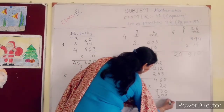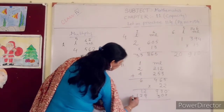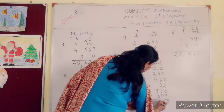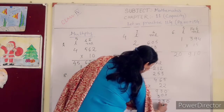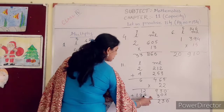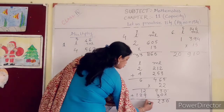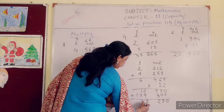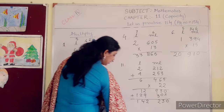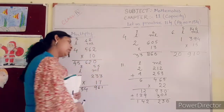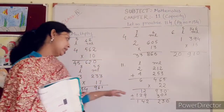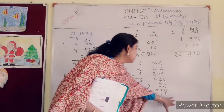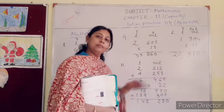Now add this one. 0, 3. 9 plus 3 is 12. 1 is in your hand. 9 plus 1 is 10. 10 plus 2 is 12. 1 is in your hand. 2 plus 1 is 3. 3 plus 1 is 4. Your answer will be 142 liter, 230 ml.